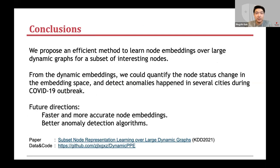The major takeaways are: we have a very efficient node embedding algorithm that can capture embeddings in very large dynamic graphs. We investigated the evolution of the Wikipedia knowledge graph in 2020 and found interesting node changes during COVID. For more details, please refer to our paper and see the released resources. Thank you.